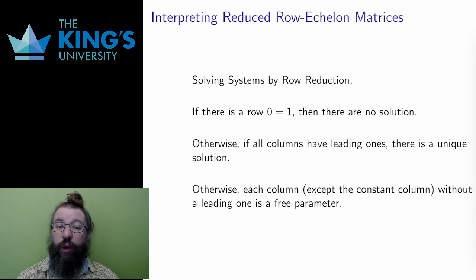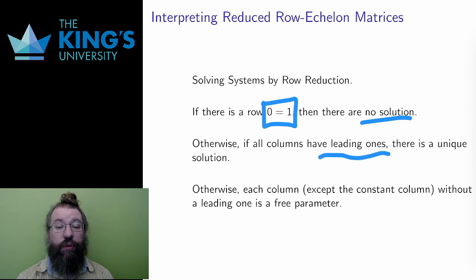If there is a row that translates to 0 equals 1, then there is no solution, because 0 equals 1 is a contradiction and cannot be satisfied. If all the columns at least left of the division have leading ones, then there is a unique solution. Every variable, since columns represent variables, will have a specific value assigned to it.